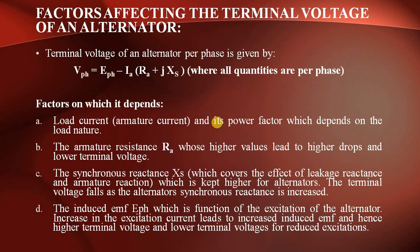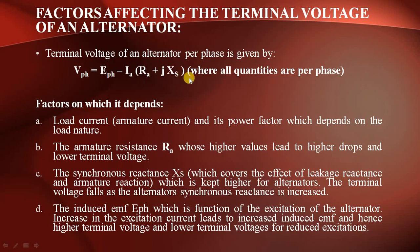In today's lecture we are going to discuss the factors affecting the terminal voltage of an alternator. The terminal voltage per phase is given by: V_phase = E_phase − Ia(Ra + jXs), where all quantities are per phase values. You must remember this formula.